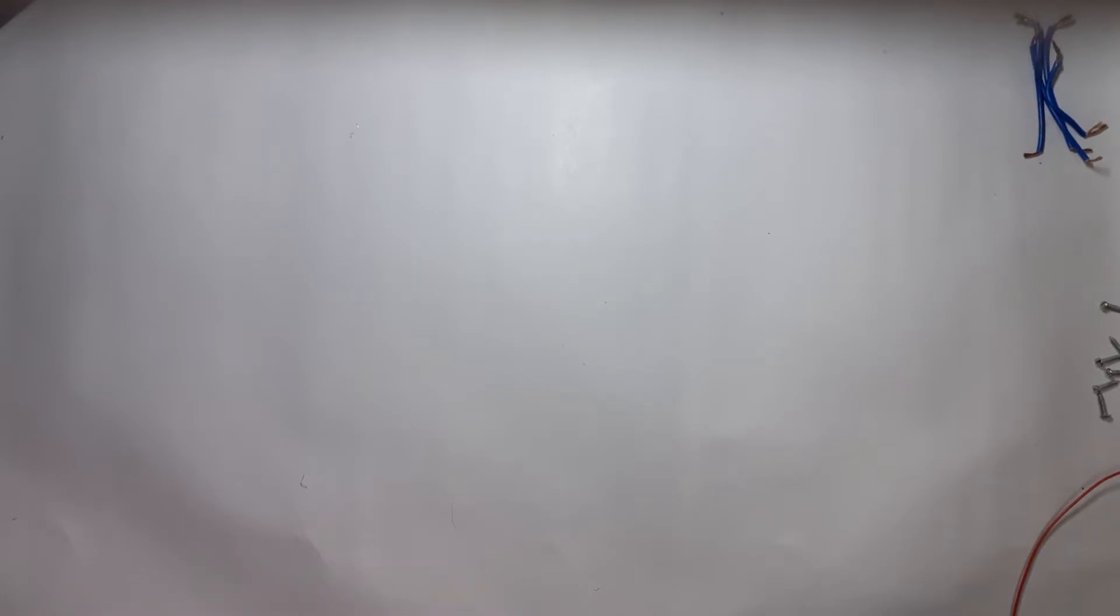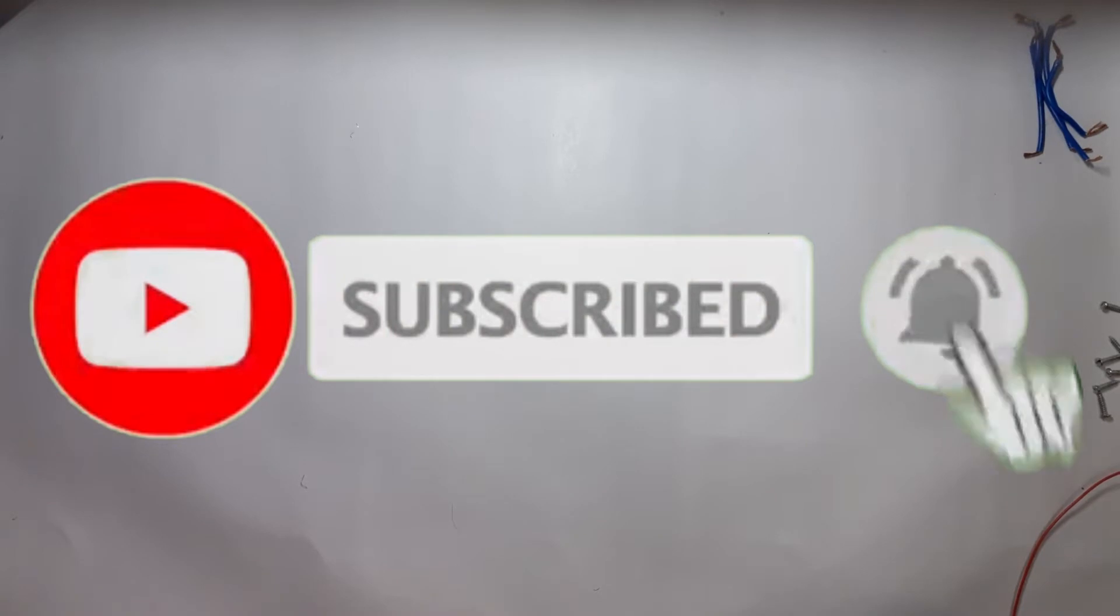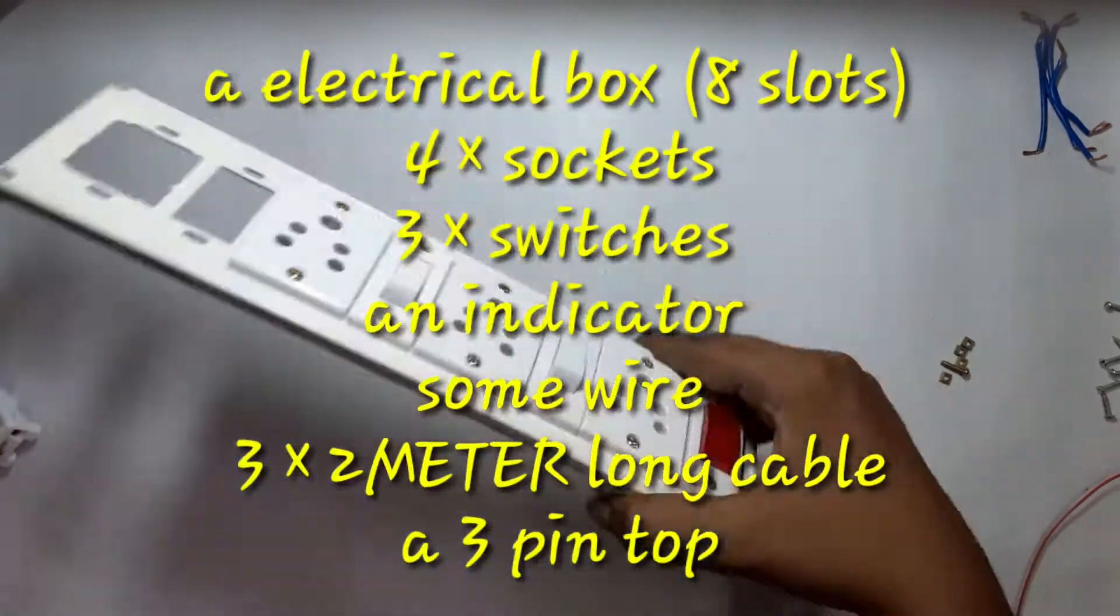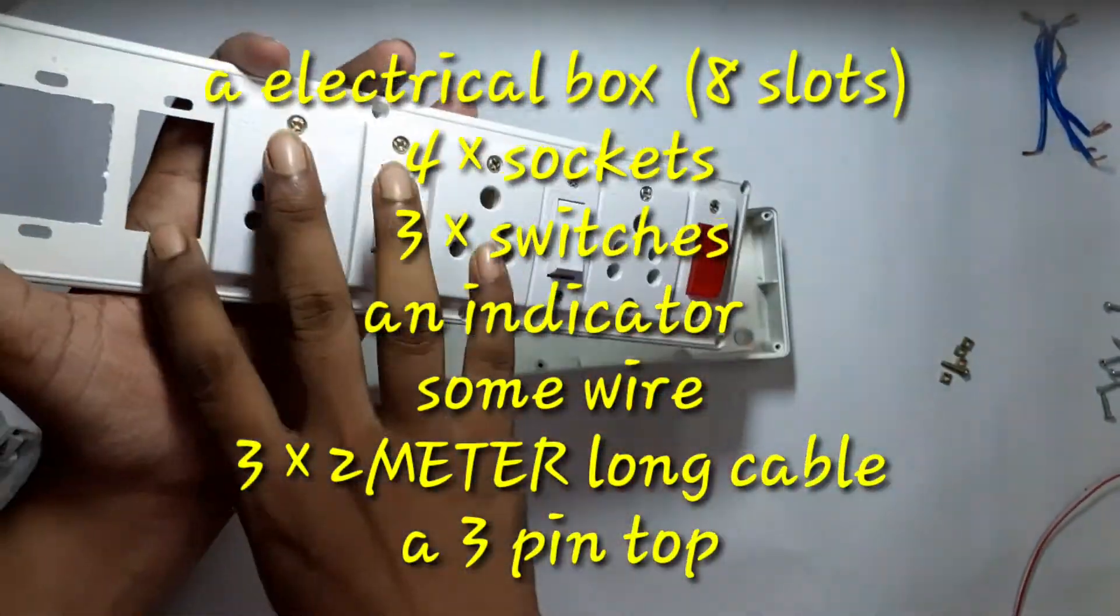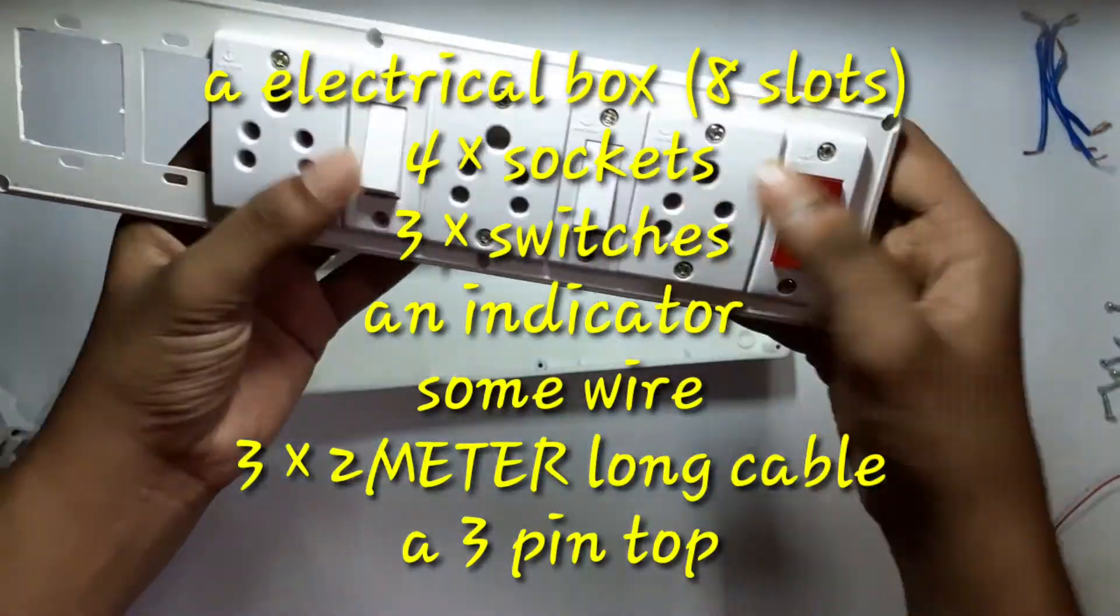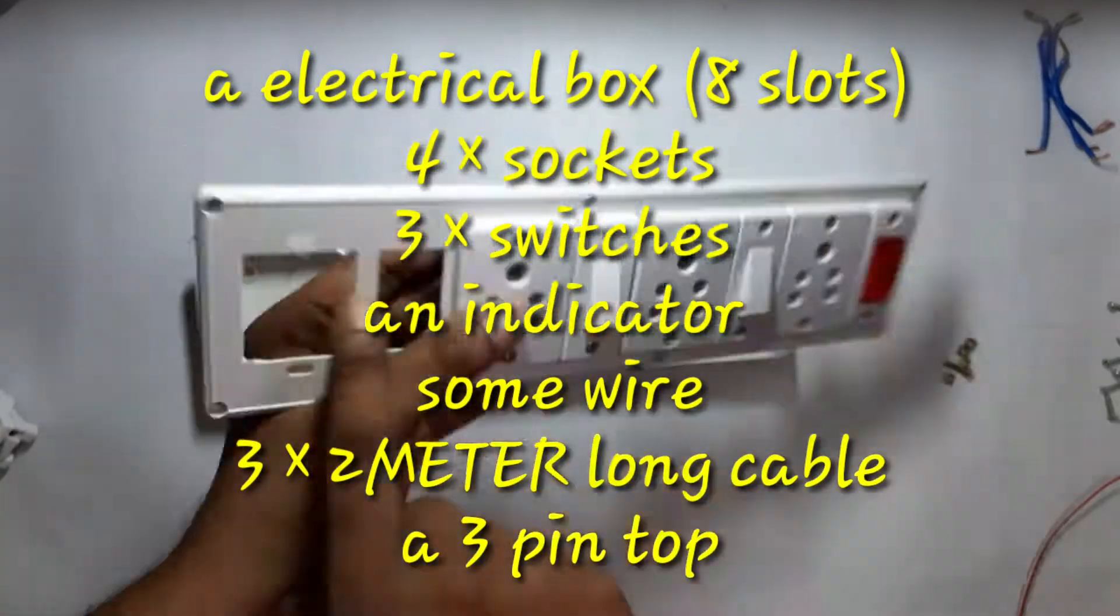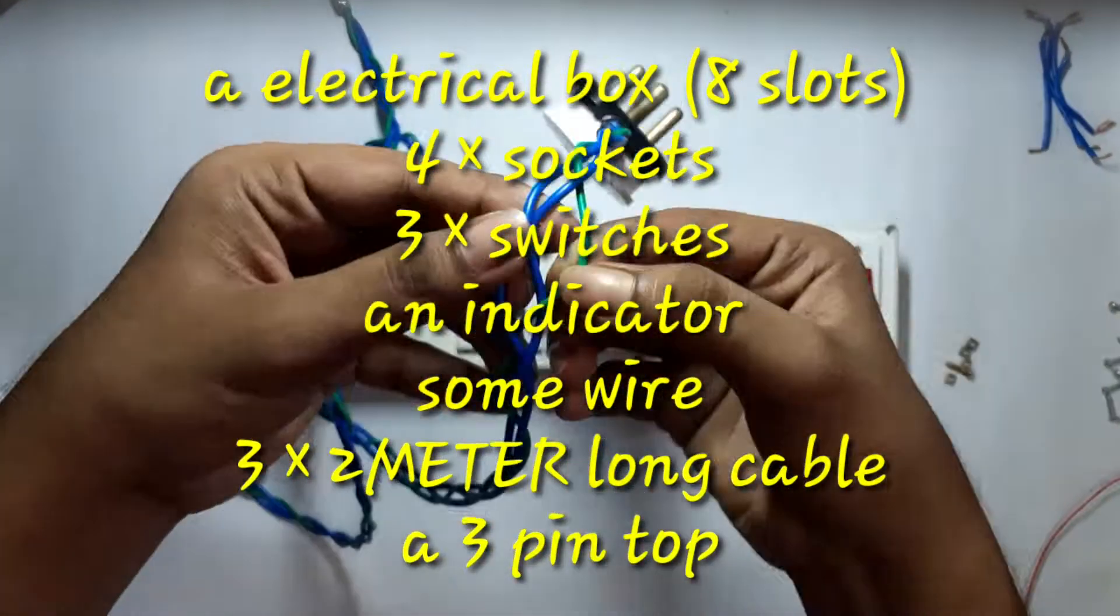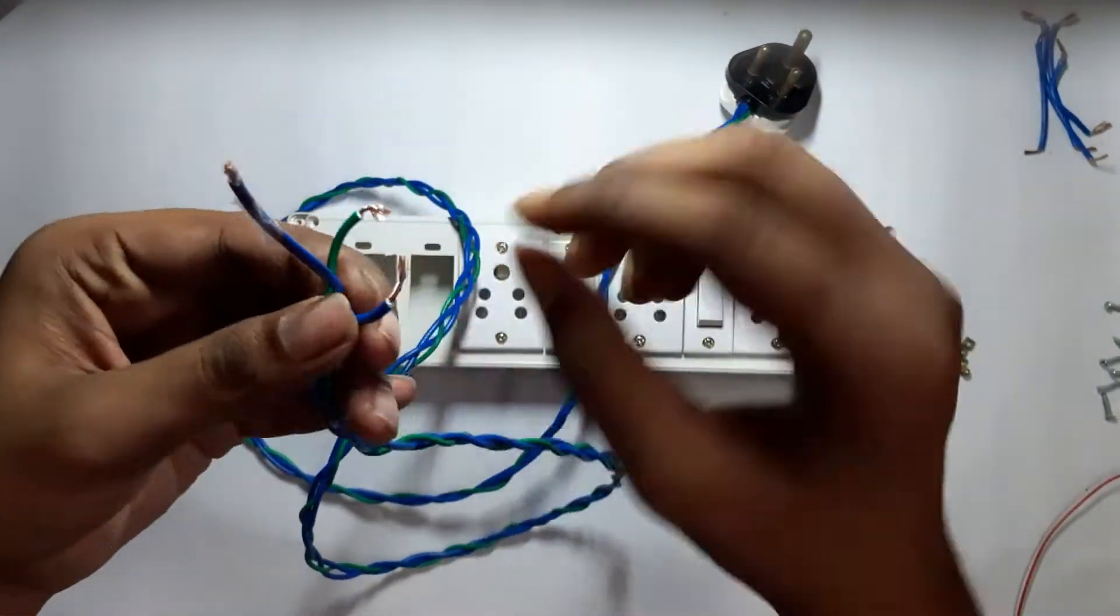Hey there guys, welcome to my YouTube channel, The Indian Jugaars. Today I will be making an extension board. For this build we will need a board box for five-pin sockets, three switches, an indicator, some wires, and also a three-pin top to plug the extension board into another wall socket.